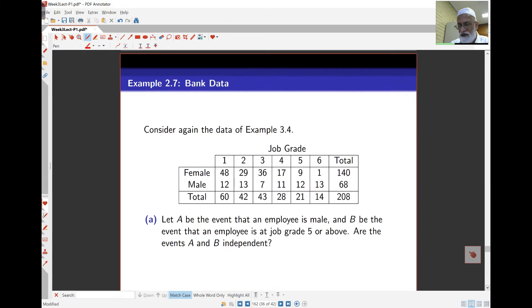Example here with bank data. We've got here that A is the event that an employee is male and B is the event that an employee is at job grade 5 or above. Are these two independent? So, we're going to find probability of A and B.